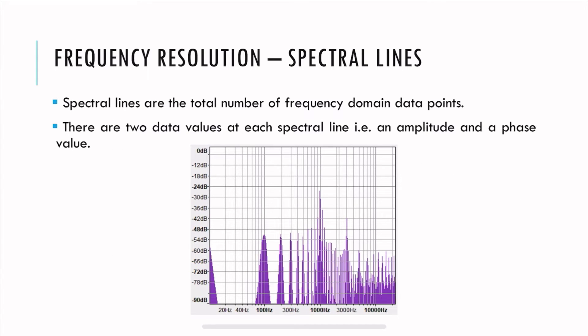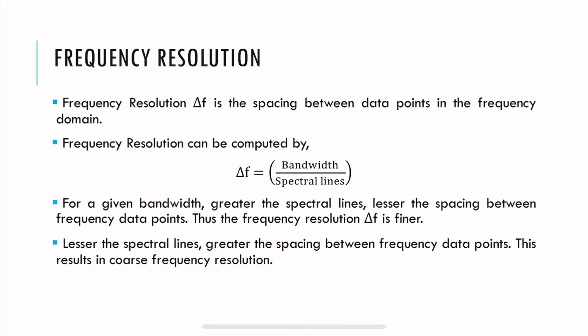Spectral lines are the total number of frequency domain data points. There are two data values at each spectral line: amplitude and phase. Frequency resolution is the spacing between data points in the frequency domain — similar to time resolution, but in the frequency domain. It is given by: bandwidth divided by spectral lines. For a given bandwidth, if you have a large number of spectral lines, the spacing is smaller, meaning finer frequency resolution. If the number of spectral lines is small, the spacing is greater, resulting in a coarse frequency resolution.